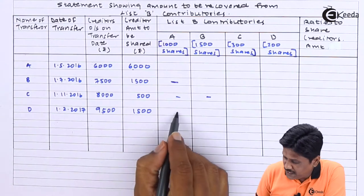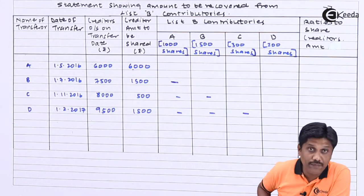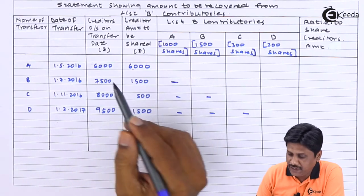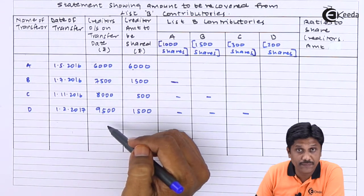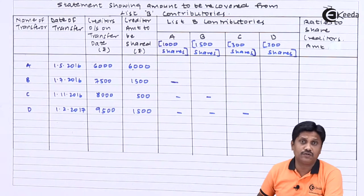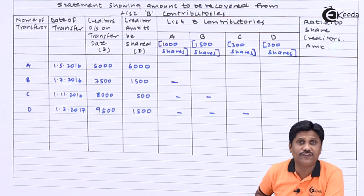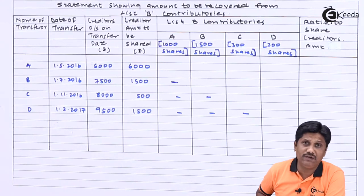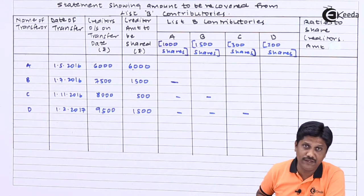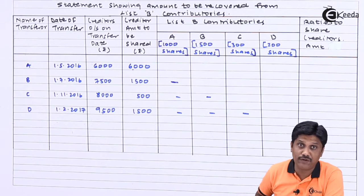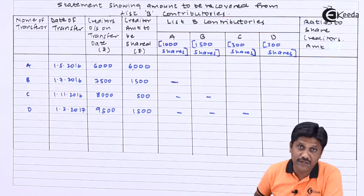D transferred his shares on 1st February 2017; the liability had become Rs. 9,500 and the incremental liability from the earlier transfer is Rs. 1,500. Here A, B, and C will not share, so the liability to be shared is only that Rs. 1,500 amount. The aggregate amount is Rs. 9,500 total, but importantly — common sense — you will share only that liability which was in existence when you transferred your shares; you are not responsible for any liability which arose after you transferred.